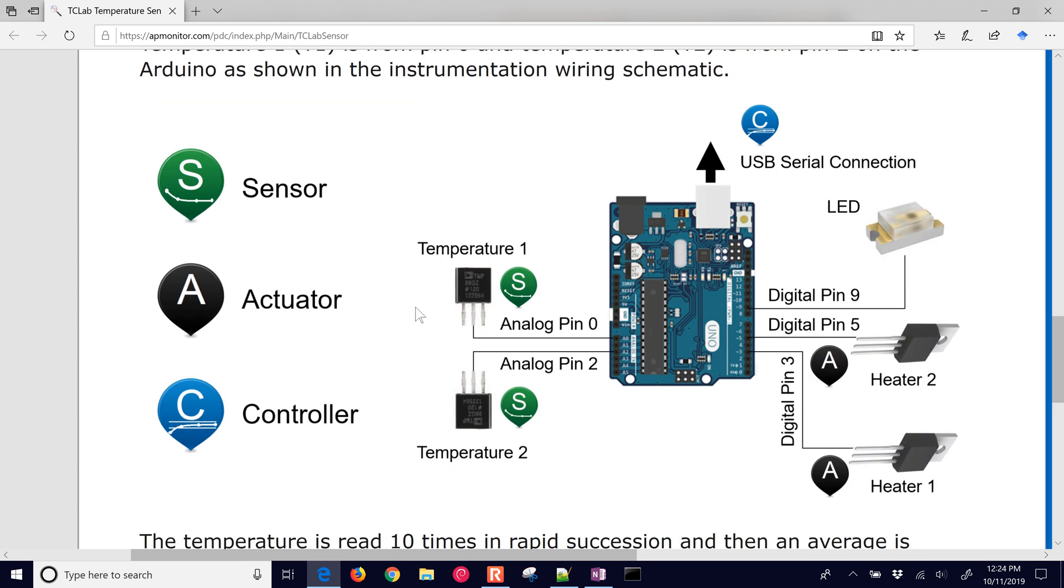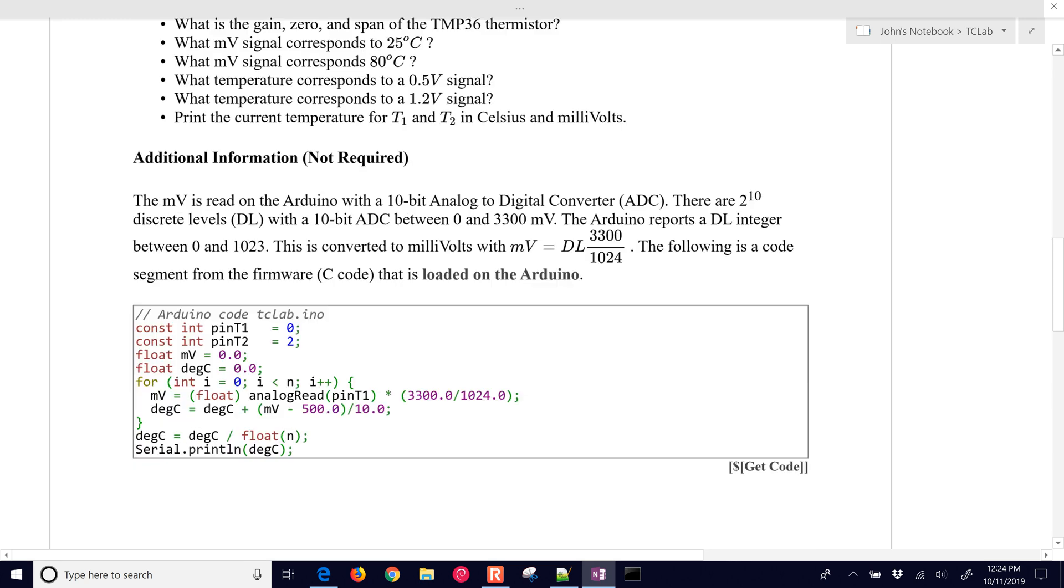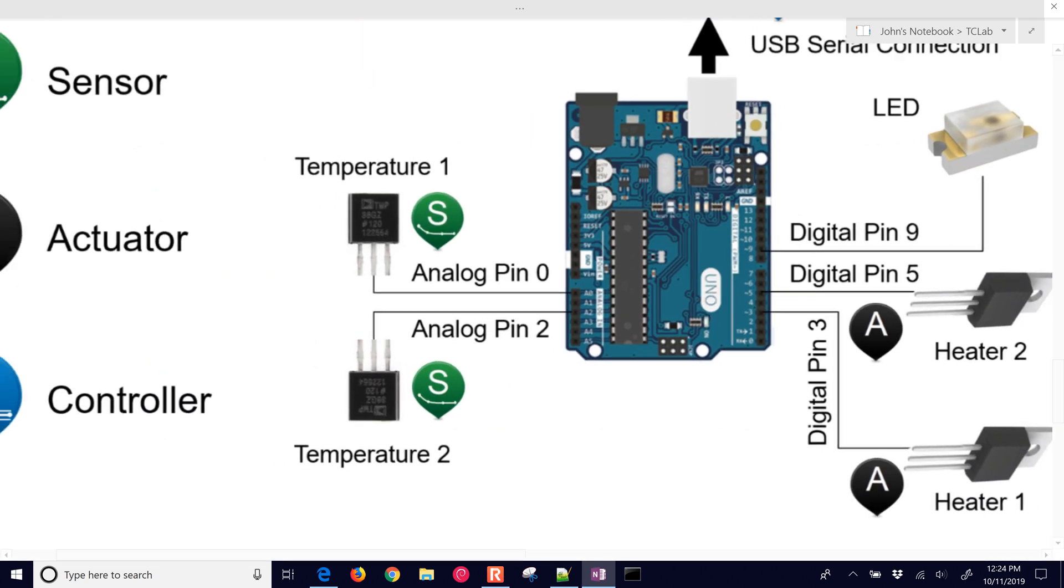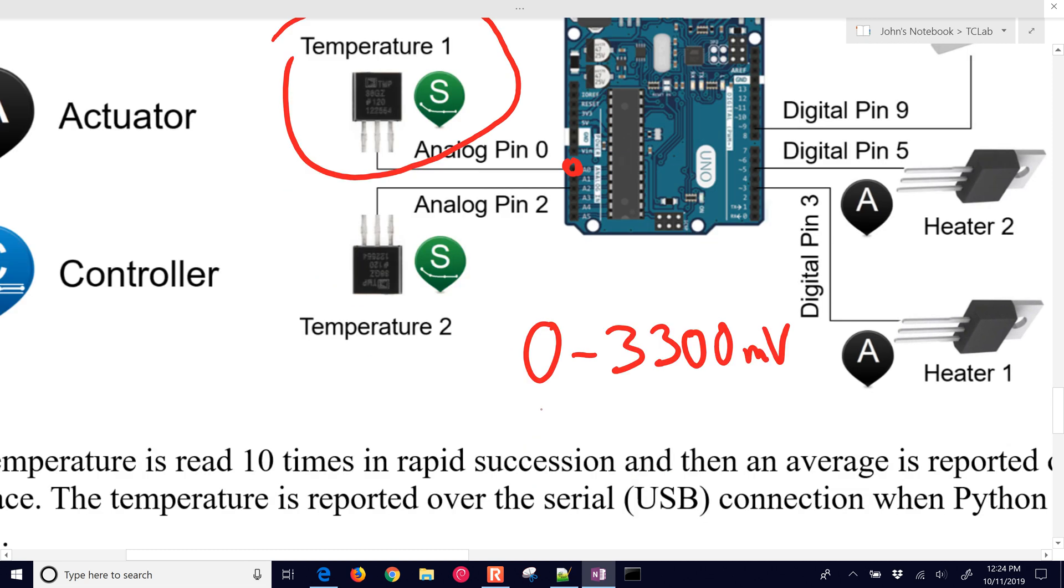Here's the schematic diagram. We have this TMP-36 sensor. It's connected up to A0, to analog zero. And this is a 10-bit, the Arduino is a 10-bit analog to digital converter, or ADC.